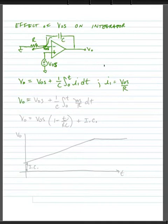Substituting everything back in, our output voltage equals VOS plus 1 over C integral from 0 to T of VOS over R DT. Solving this, we find that VO equals VOS times (1 plus T divided by RC) plus the initial conditions.